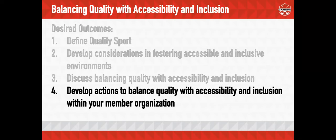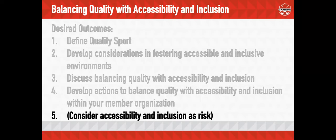Hopefully through today's workshop, we'll come up with strategies to create a program that can be both high quality and accessible and inclusive. The most important part is developing actions where we can balance quality and accessibility within your member organization — your club or academy. The final piece, if there's enough time, is the idea of considering accessibility as we would risk: awareness, tolerance, and mitigation.